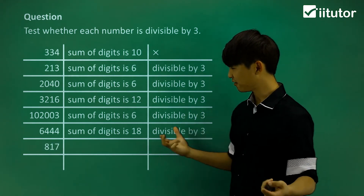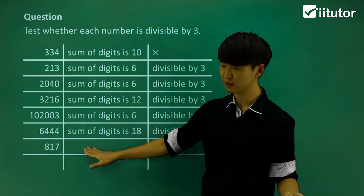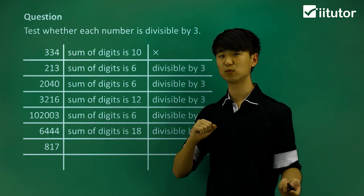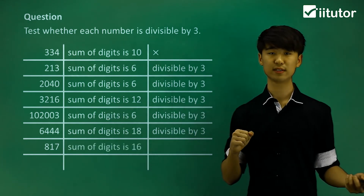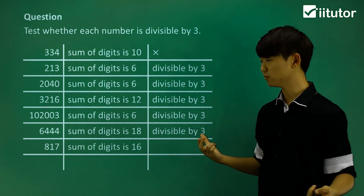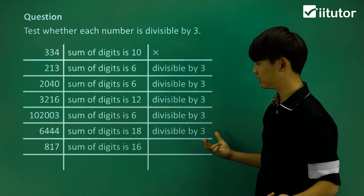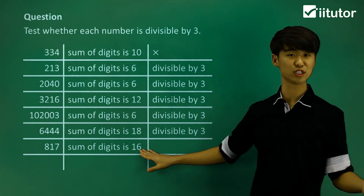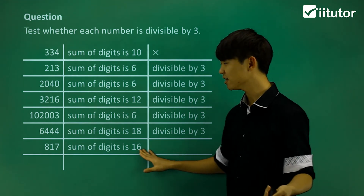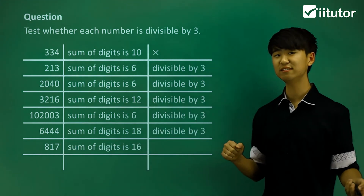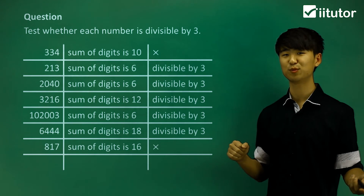817: if we look at the sum of digits here, 8 plus 1 plus 7, we get a sum of digits equal to 16. And 16 is not divisible by 3. So 817 is not divisible by 3.